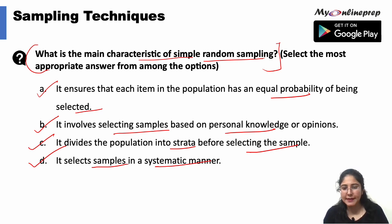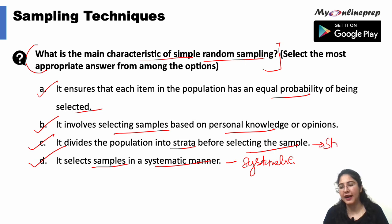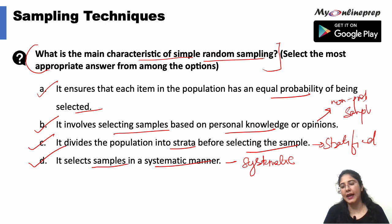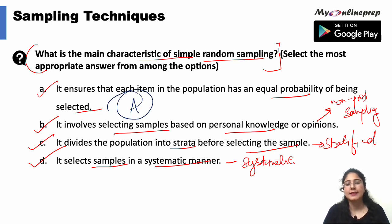Selecting samples in a systematic manner is known as systematic sampling. Dividing the population into strata is known as stratified sampling. Selecting samples based on personal knowledge or opinion is non-probability sampling, where we have some bias. So we are left with only option A, and that would be the correct option.